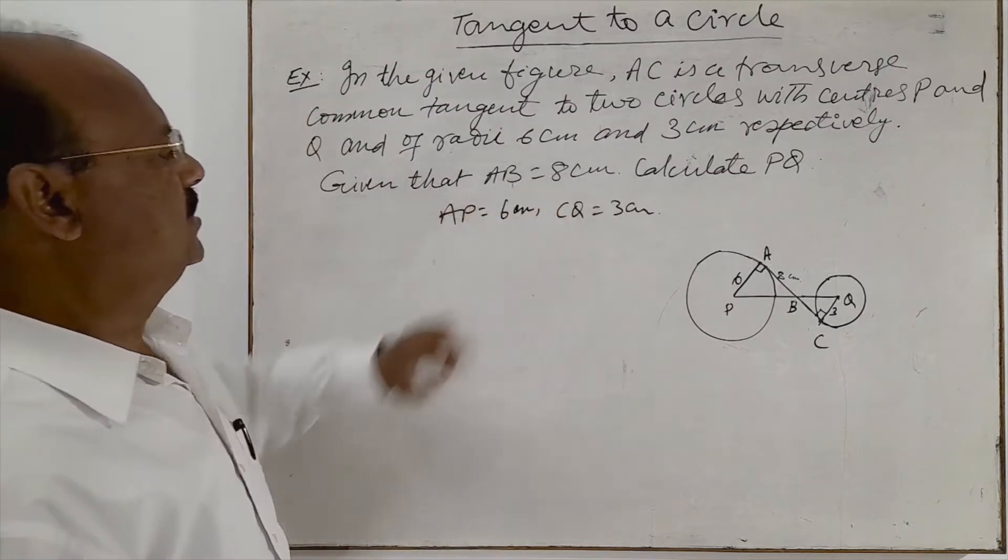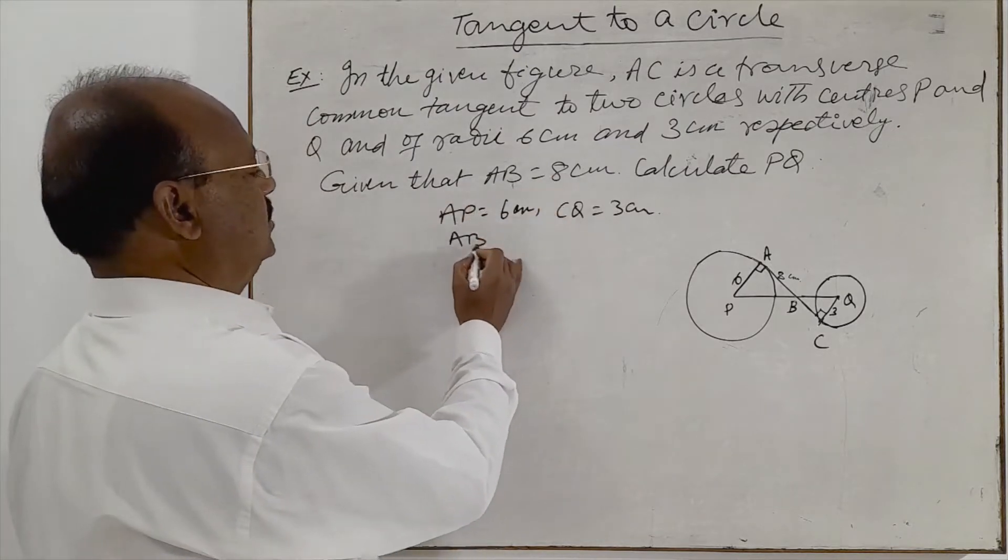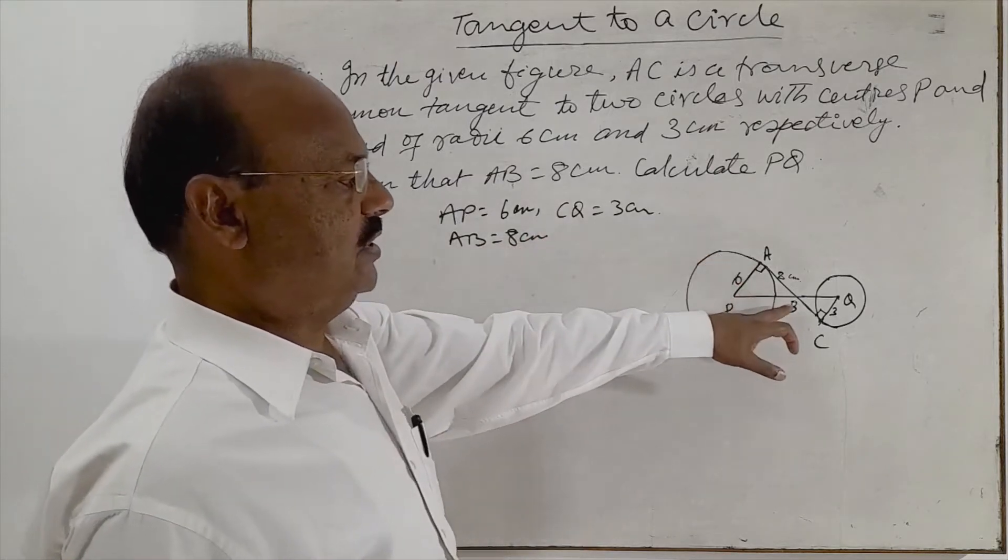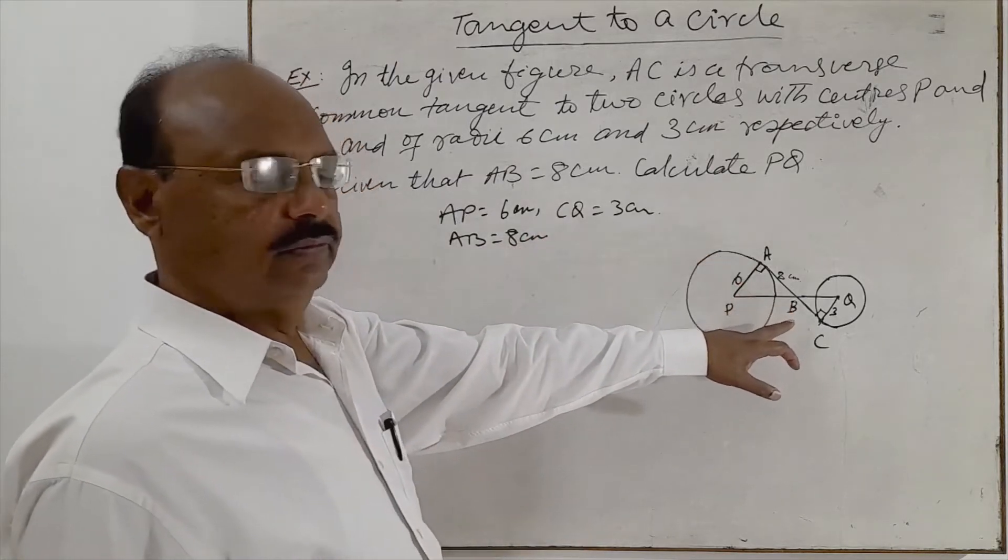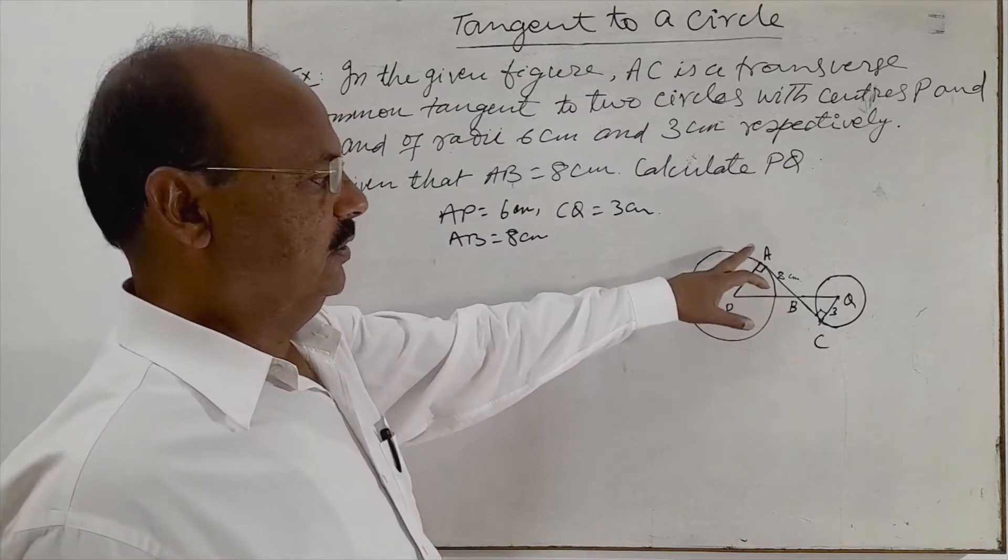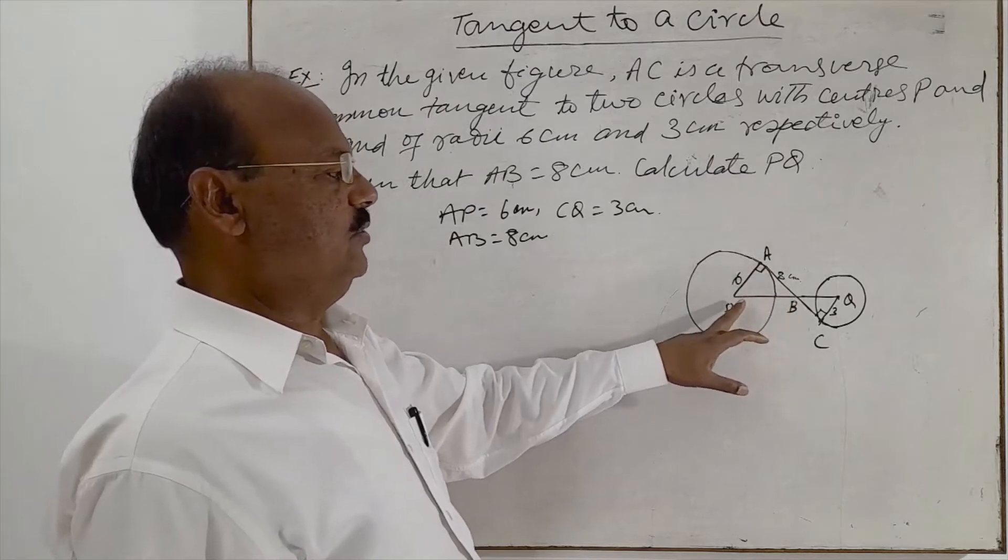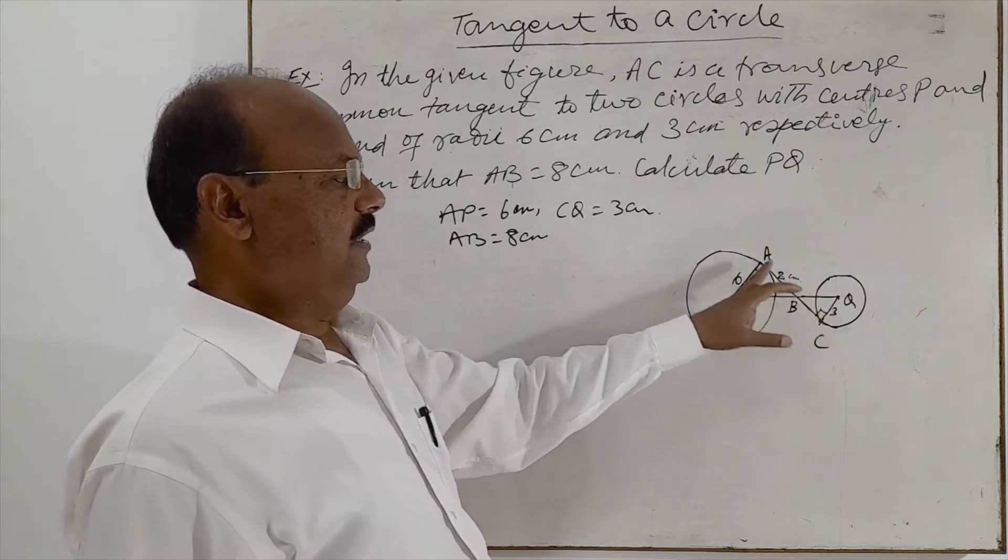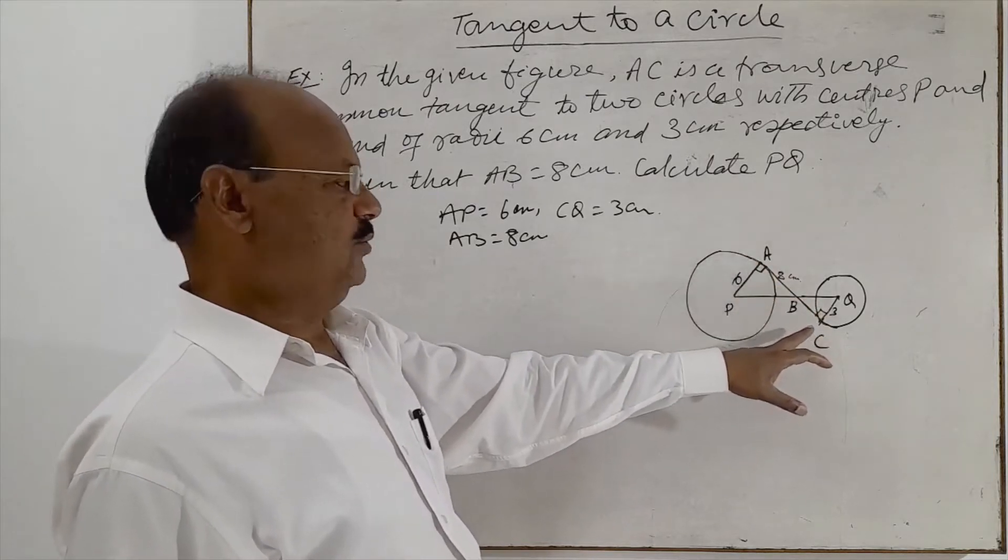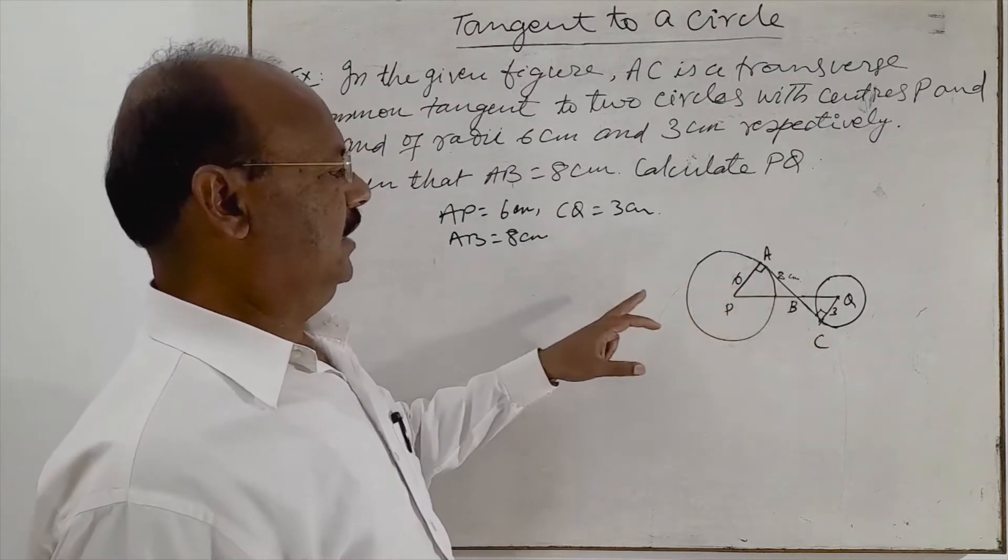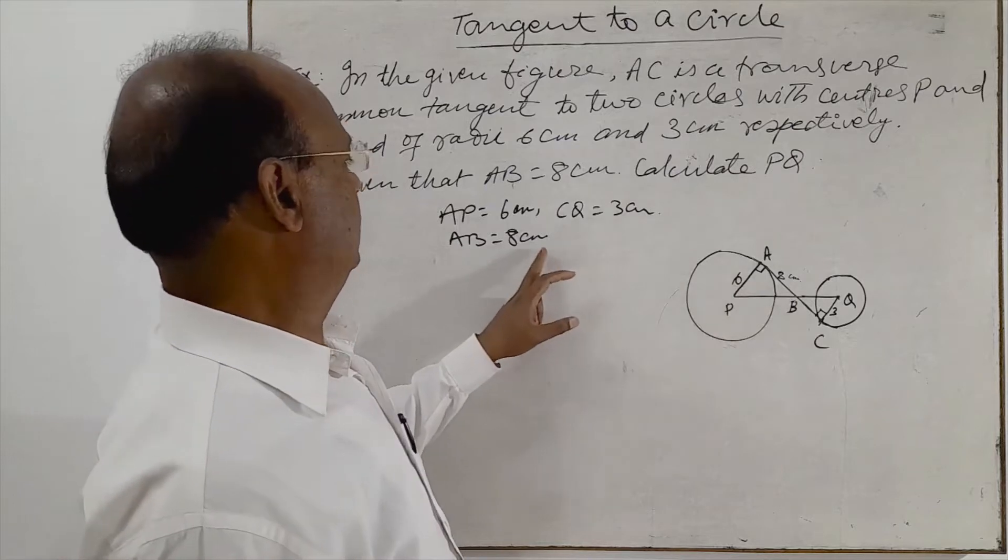Given that AB is equal to 8 cm. Here B is a point of intersection of the line segments joining centers of two circles and the transverse tangent to these two circles.